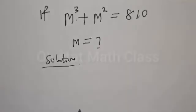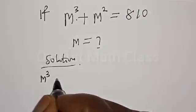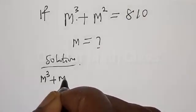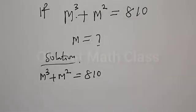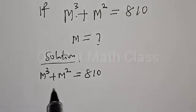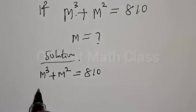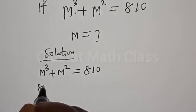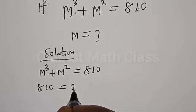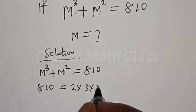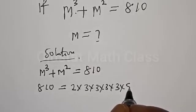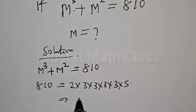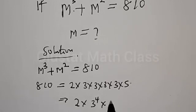Solution. We have MQ plus M squared is equal to 810. We want to express 810 in the form of MQ plus M squared. This implies that 810 is equal to 2 multiplied by 3, multiplied by 3, multiplied by 3, multiplied by 3, multiplied by 5.